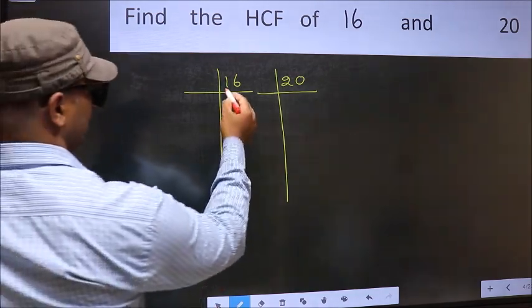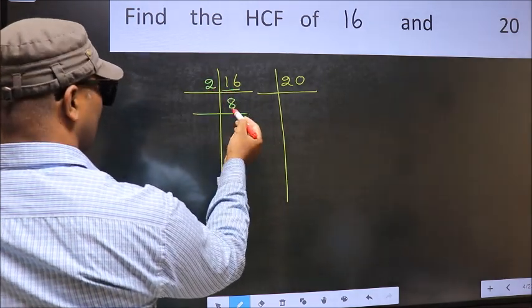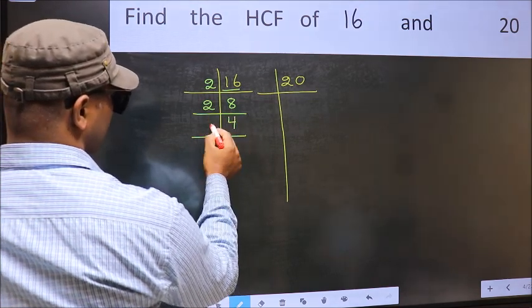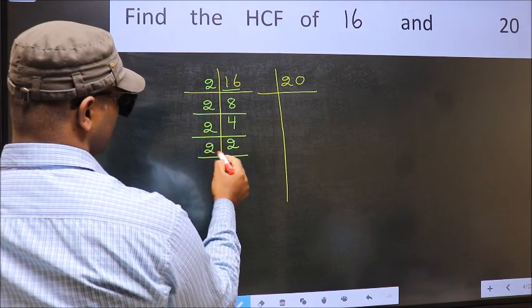Now here we have 16. 16 is 2 times 8. 8 is 2 times 4. 4 is 2 times 2. 2 is a prime number, so 2 times 1 is 2.